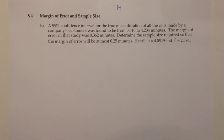A 99% confidence interval for the true mean duration of all the calls made by a company's customers was found to be from 3.510 to 4.234 minutes. The margin of error in that study was 0.362 minutes. Determine the sample size required so that the margin of error will be at most 0.25 minutes. Recall from that previous problem that S was 4.0539 and our T-star was 2.586.